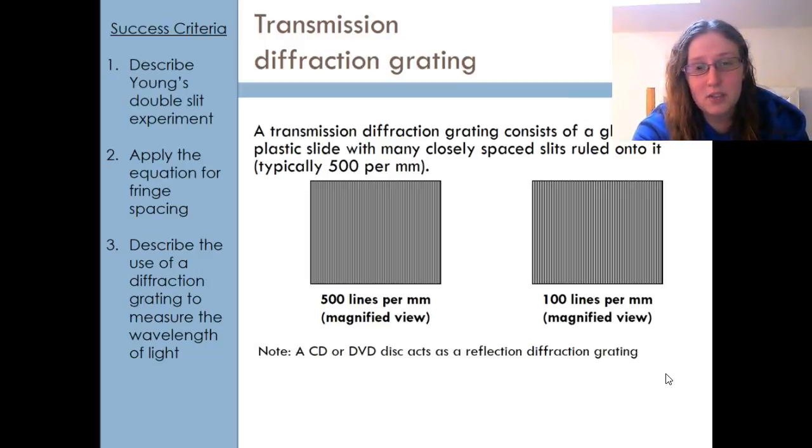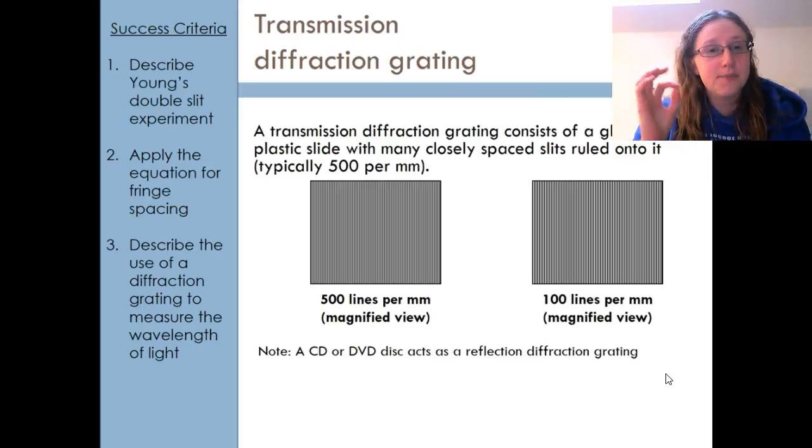We can also have things called reflection diffraction gratings where we see diffraction effects after there's been reflection, like in a CD or DVD. The effect you get when you look at that is because it's a reflection diffraction grating. Transmission diffraction gratings are basically just slides that have a lot of gaps cut into them that the light can pass through, literally hundreds of gaps per millimeter.